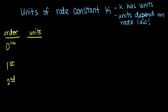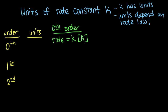First, let's look at zeroth order. Zeroth order reactions have a rate law that looks like this: the rate is equal to k times the concentration of your reactant A to the zeroth power. Anything to the zeroth power is just 1, so our rate is equal to the rate constant k.